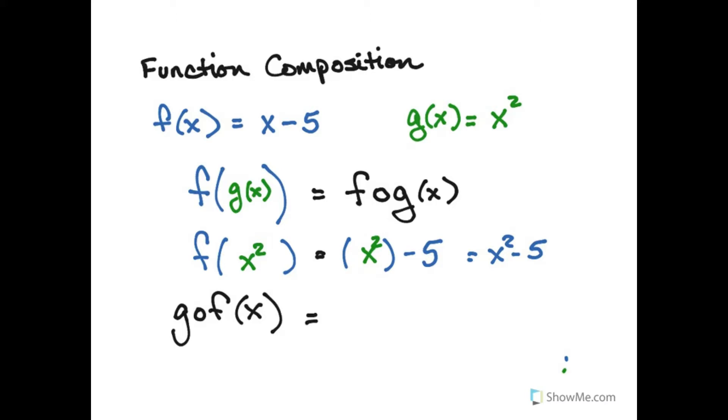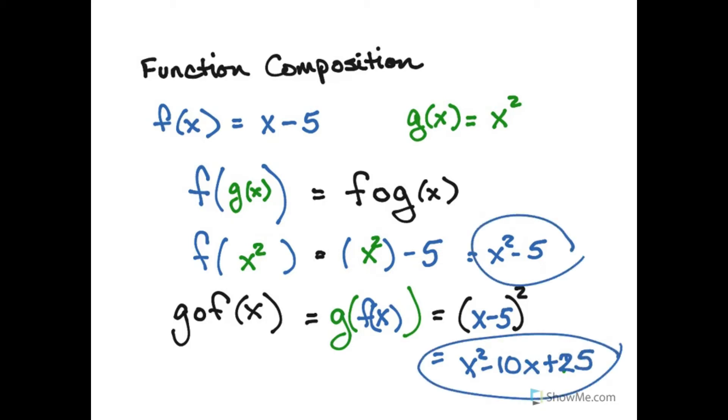So g composed f would be g of f of x. And that means I should put the expression for f into g where x is. So g has an x squared. If I put f inside of where x is, I get x minus 5 squared. So that comes out to be x squared minus 10x plus 25. And it's a different answer from x squared minus 5.